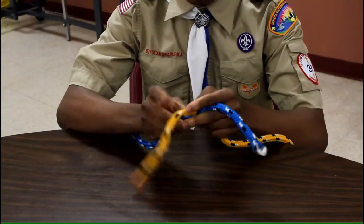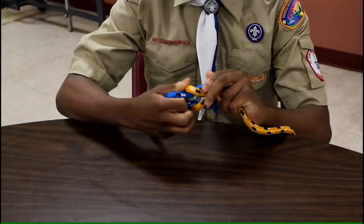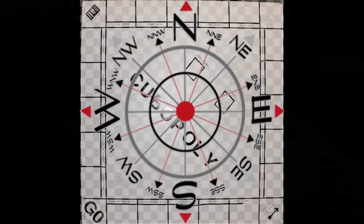Knots to You is where a scout teaches how to tie a square knot. In the Compass Corner, the cubs learn the 16 points of the compass.